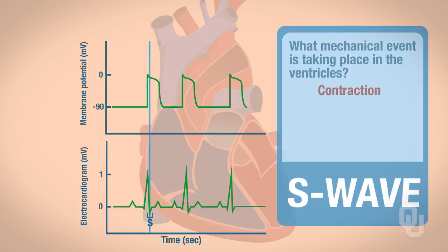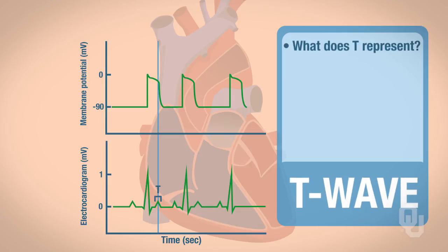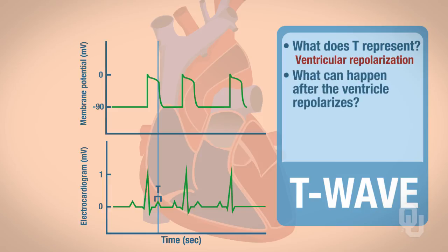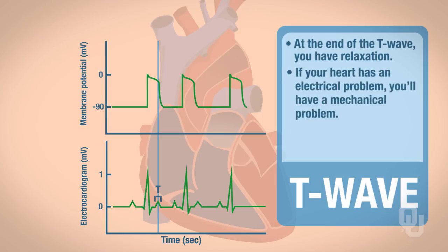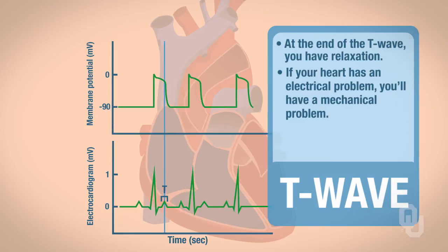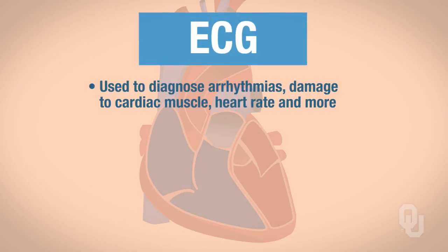Now let's do a similar thing for the T wave. T represents ventricular repolarization. After the ventricle repolarizes, it can relax. So at the end of the T wave, you have relaxation. So if your heart has an electrical problem, you will have a mechanical problem. We can use ECGs to diagnose arrhythmias, damage to cardiac muscle, heart rate, and more.